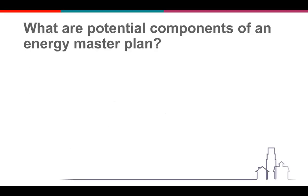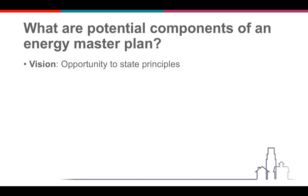Now that we understand the purpose of a master plan, what are the potential components of this plan? If you wanted to go and do a plan yourself, what are the things that you would need to look for? Most plans begin with a vision. This is your opportunity to state your principles — what do you believe as a community and where do you want to go? What do you want your future to look like? This is a really important and critical part of the plan because all of the things that come after it should align with it and be working towards that.